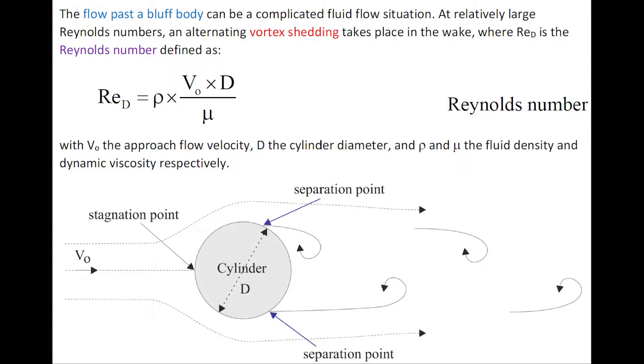The flow past a bluff body can be a complicated flow situation. At a relatively large Reynolds number, an alternating vortex shedding takes place in the wake, with the Reynolds number definition being shown here.